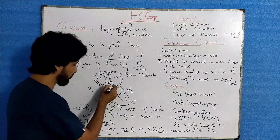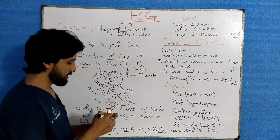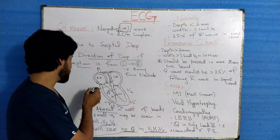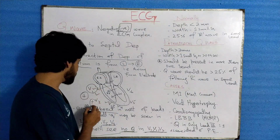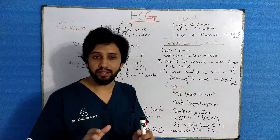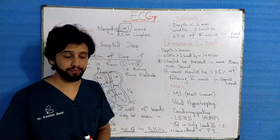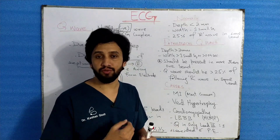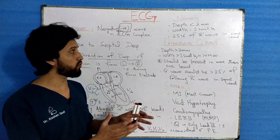In V1, V2, and V3, the impulse is traveling towards those leads, which means the impulse will be positive, and this positive will be neutralized by the negative wave so that there will be no Q wave seen in V1, V2, and V3. This is how the Q wave is recorded through different electrodes placed on the surface of the body and shown on the ECG paper.